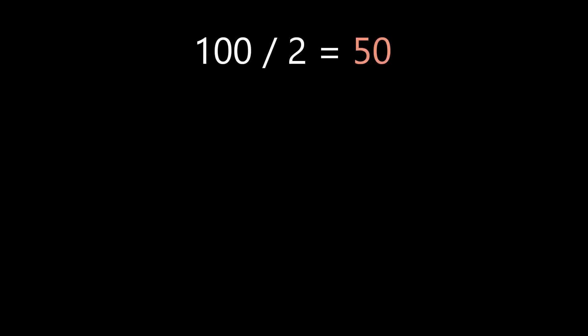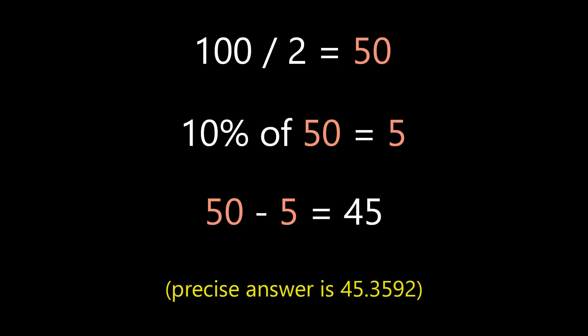Let's start with a simple example. 100 divided by 2 equals 50. 10% of 50 you can get by just removing the last digit, and that leaves you 5. So, 50 minus 5 is 45. This gets you very close to the precise answer, which is 45.3592.